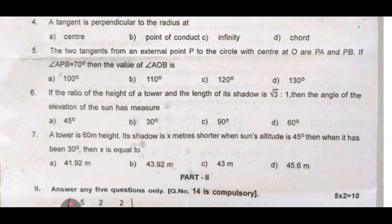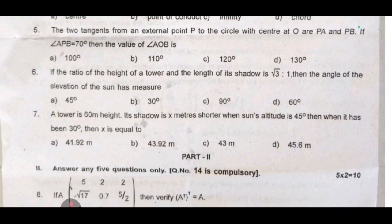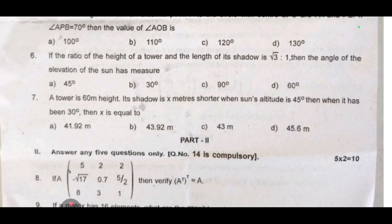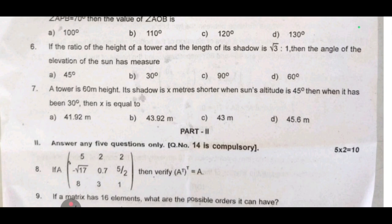If angle APB equal 70 degree then the value of angle AOB is dash. Sixth one: if the ratio of the height of a tower and the length of its shadow is root 3 is to 1, then the angle of elevation of the sun has measured dash.